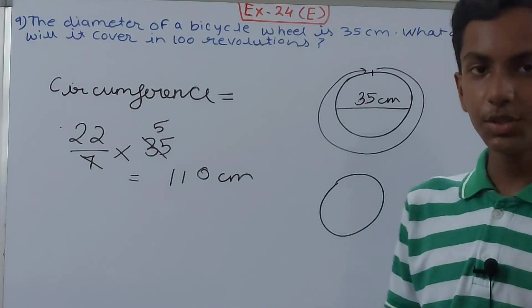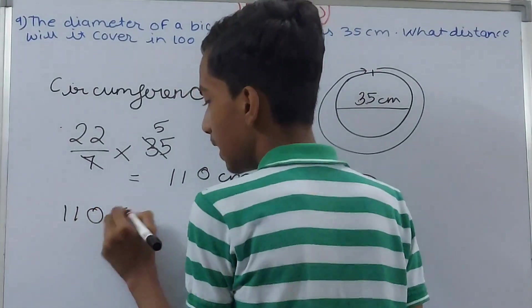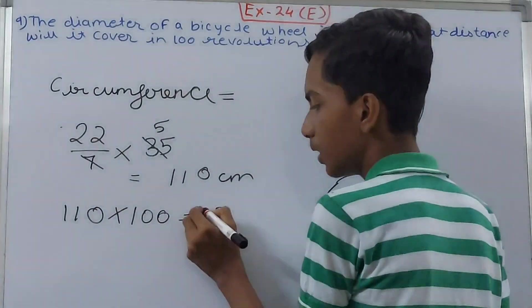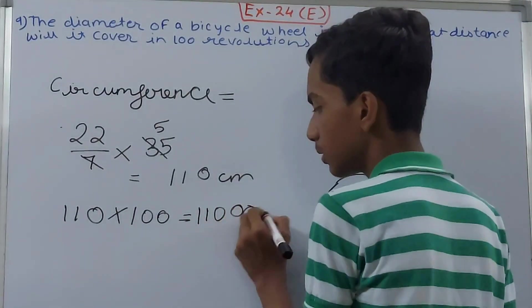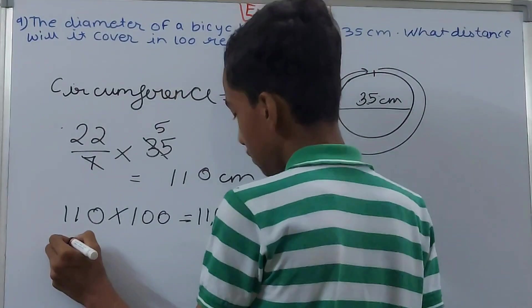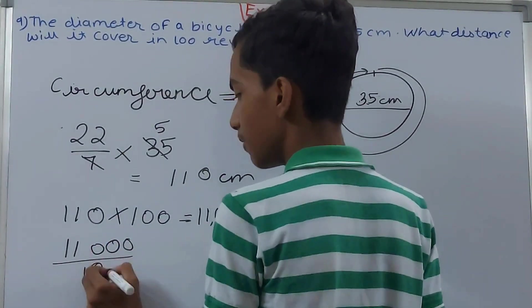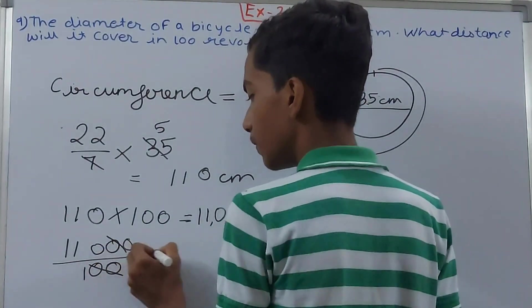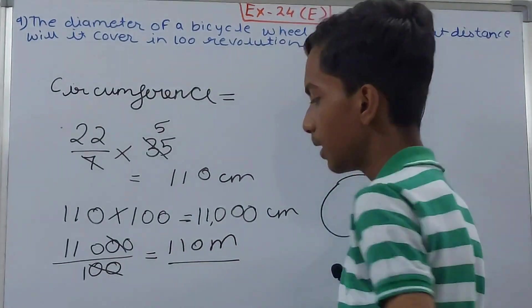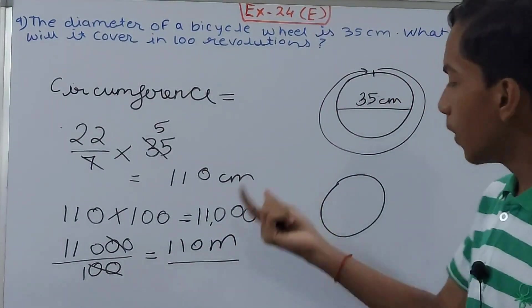Simply multiply 110 by 100, that is 11,000 centimeters. We can change the unit to meters: divide by 100, so we get 110 meters. This is our answer—we can say the distance is 110 meters.